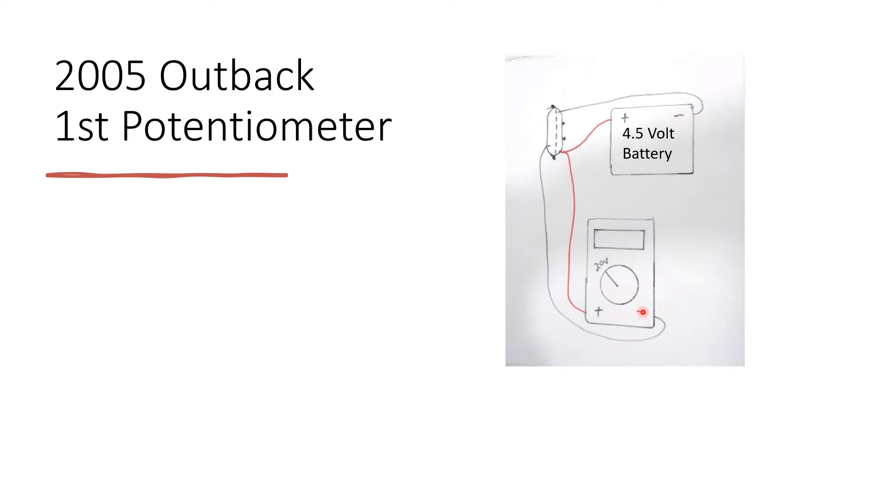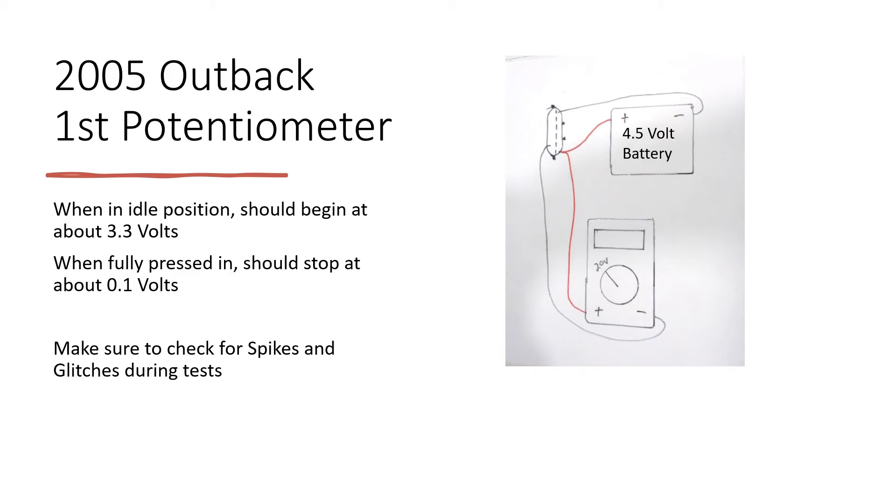The negative from the multimeter connects to the second from the bottom pin, and the negative from the battery connects to the top pin. After doing this, it should read about 3.3 volts in the idle position, and as you slowly press it down it should go to about 0.1 volts. You're checking for spikes and glitches.